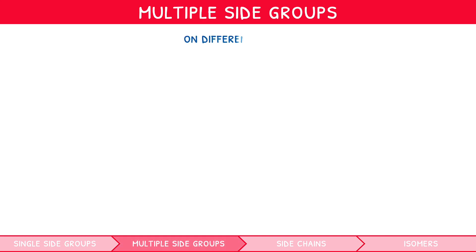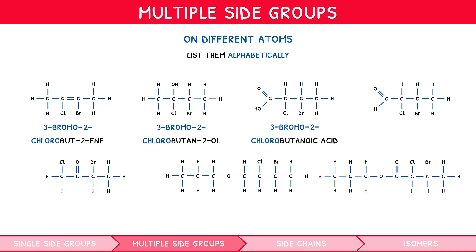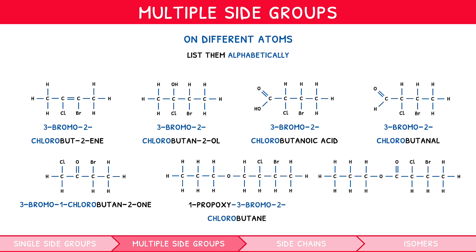However, there can be more than one side group. If they are different atoms, we simply list them one after the other, stating the carbons on which they are found. We list them alphabetically, not by carbon number. If we revisited all our examples, adding a bromine atom adjacent to the chlorine: 2-chlorobutene becomes 3-bromo-2-chlorobutene, 2-chlorobutan-2-ol becomes 3-bromo-2-chlorobutan-2-ol, 2-chlorobutanoic acid becomes 3-bromo-2-chlorobutanoic acid, 2-chlorobutanal becomes 3-bromo-2-chlorobutanal, 1-chlorobutan-2-ol becomes 3-bromo-1-chlorobutan-2-ol, 1-propoxy-2-chlorobutane becomes 1-propoxy-3-bromo-2-chlorobutane, and propyl-2-chlorobutanoate becomes propyl-3-bromo-2-chlorobutanoate.